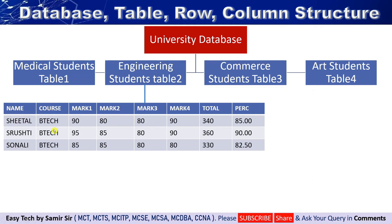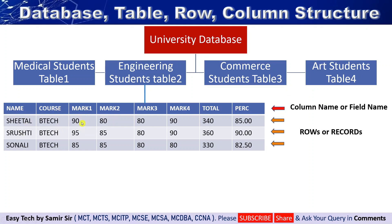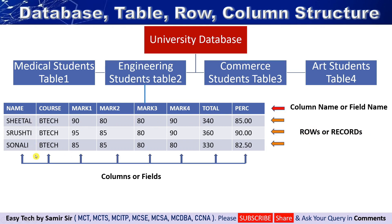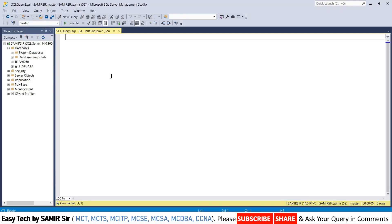These vertical pieces of information are called column names or field names. Name is one column, course is another, mark1 is another, marks2, marks3 — when all these columns are combined together it makes one row, also called a record. Vertically these are called columns or fields. When all records are combined together it makes one table, and when all tables are combined it is saved under a database.